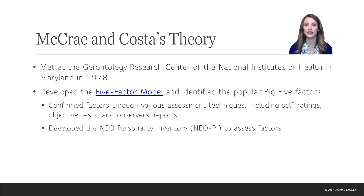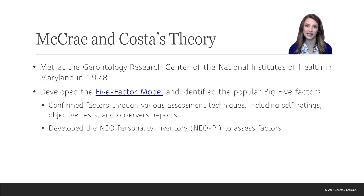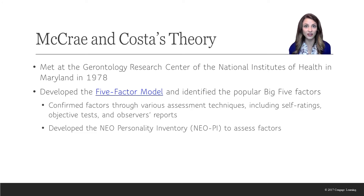When they initially identified these five factors, they went out of their way to confirm whether those were the five factors — making sure there weren't four or six. They confirmed the presence of these five factors through self-ratings, objective personality tests, and ratings from others, such as an individual's therapist. Using their data and model, they developed the NEO Personality Inventory. The NEO-PI, just like the 16 PF, is still used today to assess personality.